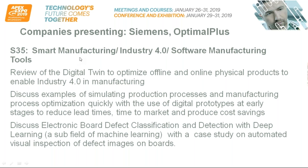The S35 session will look at Smart Manufacturing, Industry 4.0, and Software Manufacturing Tools. Companies presenting include Siemens and Optimal Plus. We'll review digital twin to optimize offline and online physical products to enable Industry 4.0 in manufacturing, with examples of simulating production processes quickly using digital prototypes at early stages to reduce lead times, time to market, and produce cost savings. We'll also discuss electronic board defect classification and detection with deep learning — a subfield of machine learning — with a case study on automated visual inspection of defect images on boards.